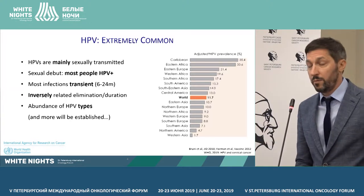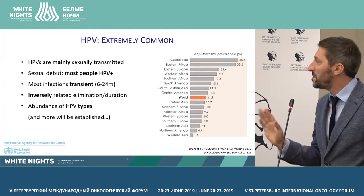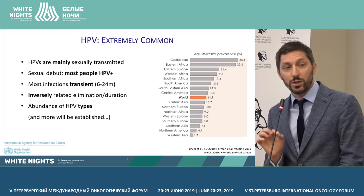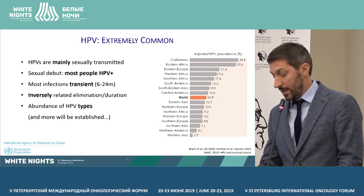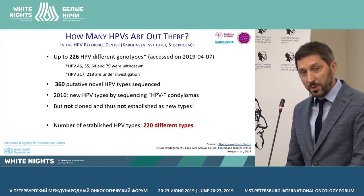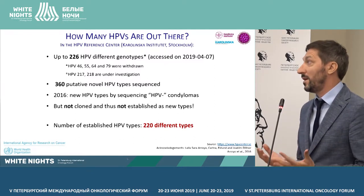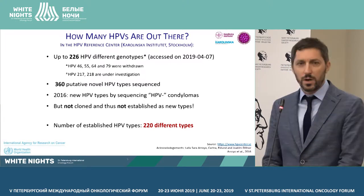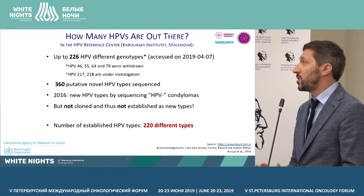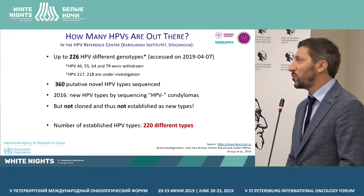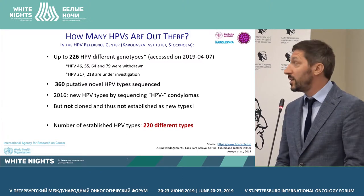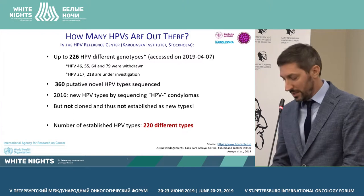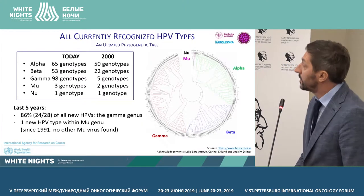You can see the data for the spread of HPV in different regions of the world. The figure in red is the incidence on average in the cervical epithelium of women with a completely normal cervical picture. How many HPV types are there in the world? From the reference center for HPV at the Karolinska Institute, they indicate 226 genotypes, and there may be up to 360 types — not yet cloned or classified.